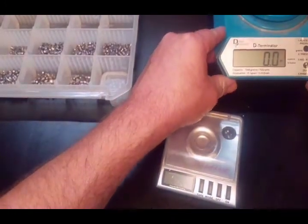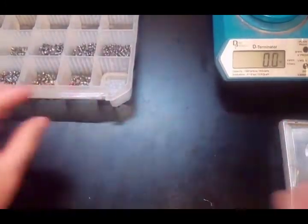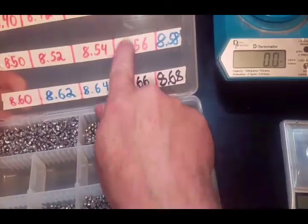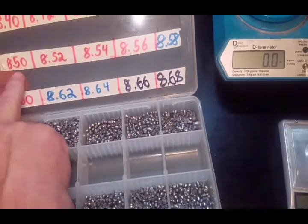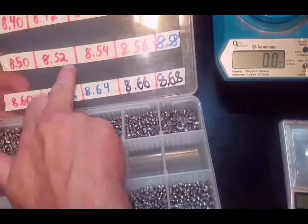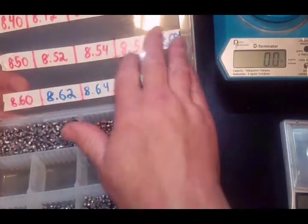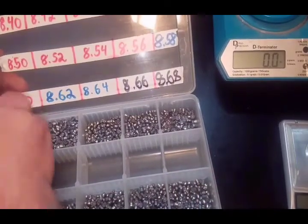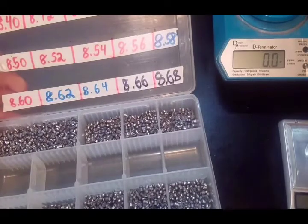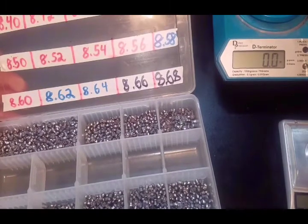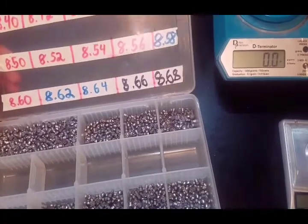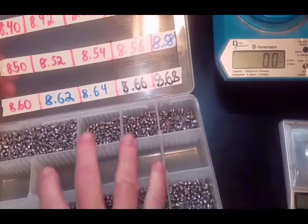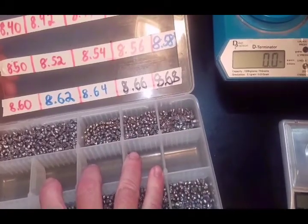Before we get started, I'm going to go over how I have these sorted out. As you can see, they're separated by 8.50, 8.52, 8.54, etc. If you notice, this row is gone, which I usually use everything from 8.40 to 8.48 in an average match. If it's not a Grand Prix, it's just a local match, I'll use this whole line and use those to continue on with my sorting process.